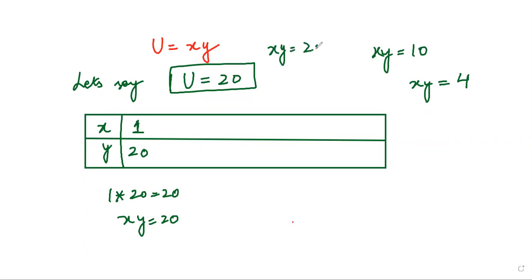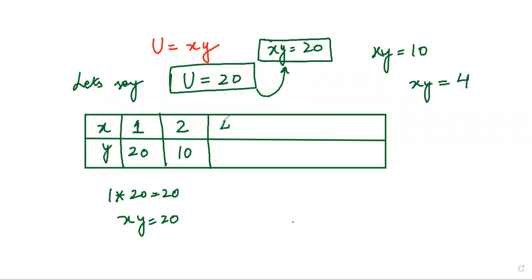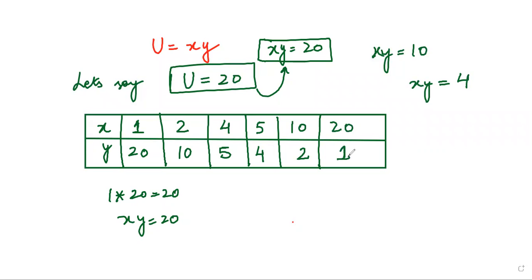I want x times y equal to 20. When x is 2, y is 10. When x is 4, y is 5. When x is 5, y is 4. When x is 10, y is 2. When x is 20, y is 1. These are different values of x and y that satisfy xy = 20.